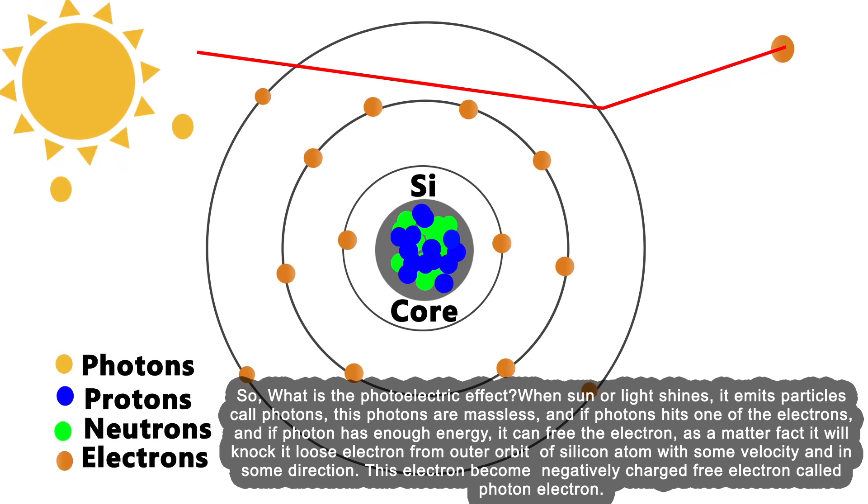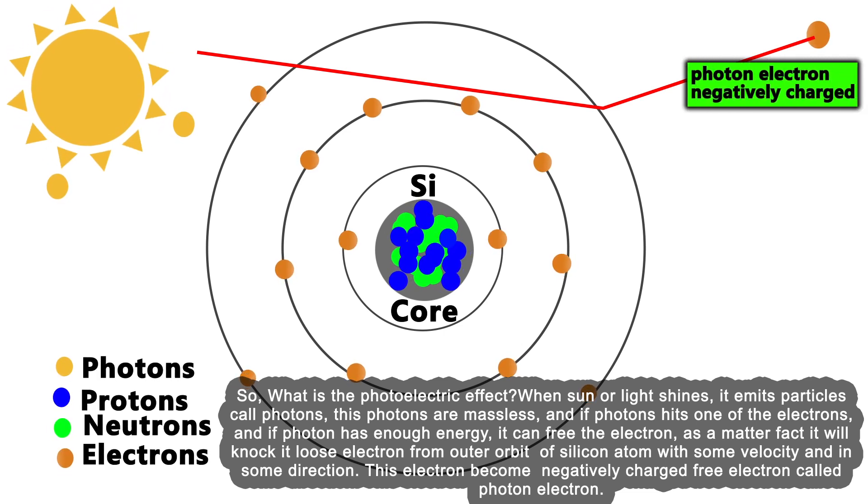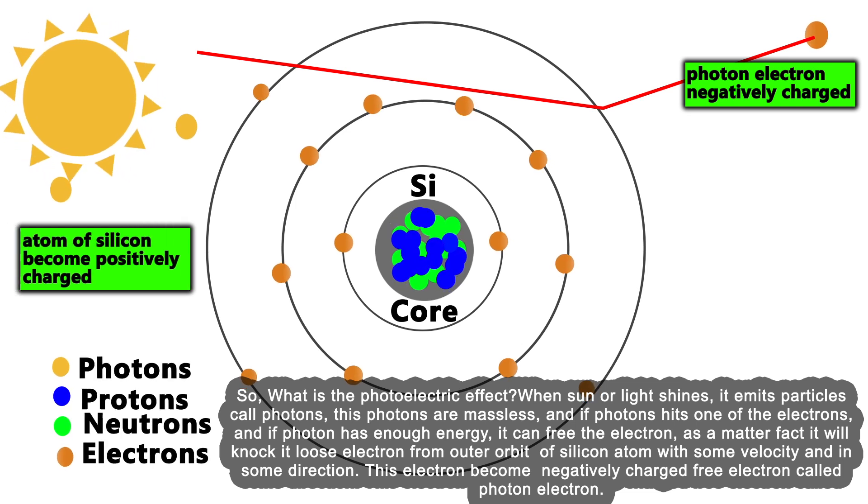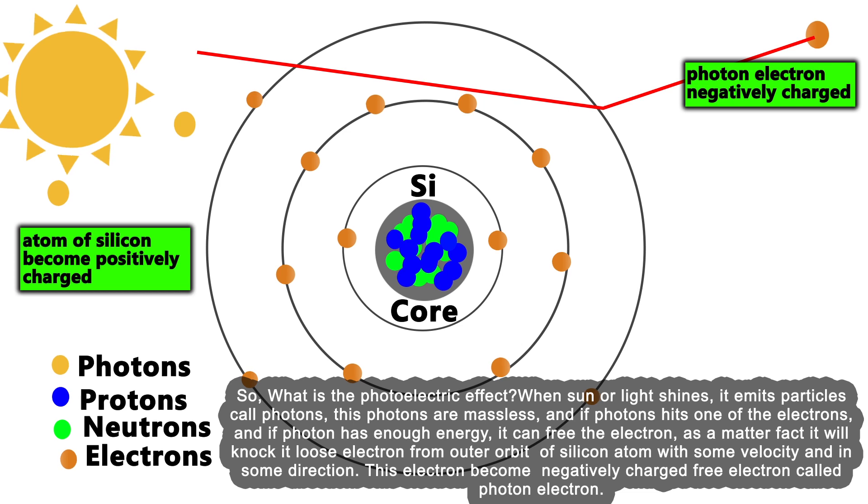As a matter of fact, it will knock loose an electron from the outer orbit of a silicon atom with some velocity and direction. This electron becomes a negatively charged free electron called a photoelectron.